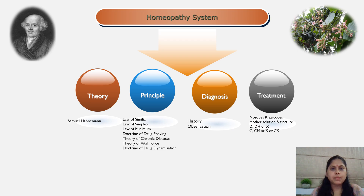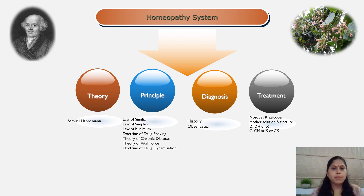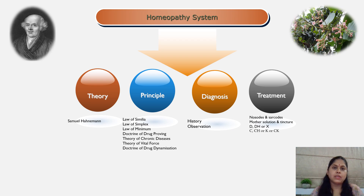Homeopathy revolves around seven principles. First is the principle of individualization — no two individuals are alike, so the same disease in two different individuals requires different medicines. Next is the principle of similars — the medicine should produce similar symptoms of a disease in a healthy individual and then be used to treat that disease. Then the principle of minimum dose — a minimum single medicine, without combination and with minimal dilution, should be used. The first law of proving states that the medicine should have the capacity to produce the disease state in a healthy individual. The law of dynamization states that the medicine should preserve the normal state of the healthy body after disease conditions.